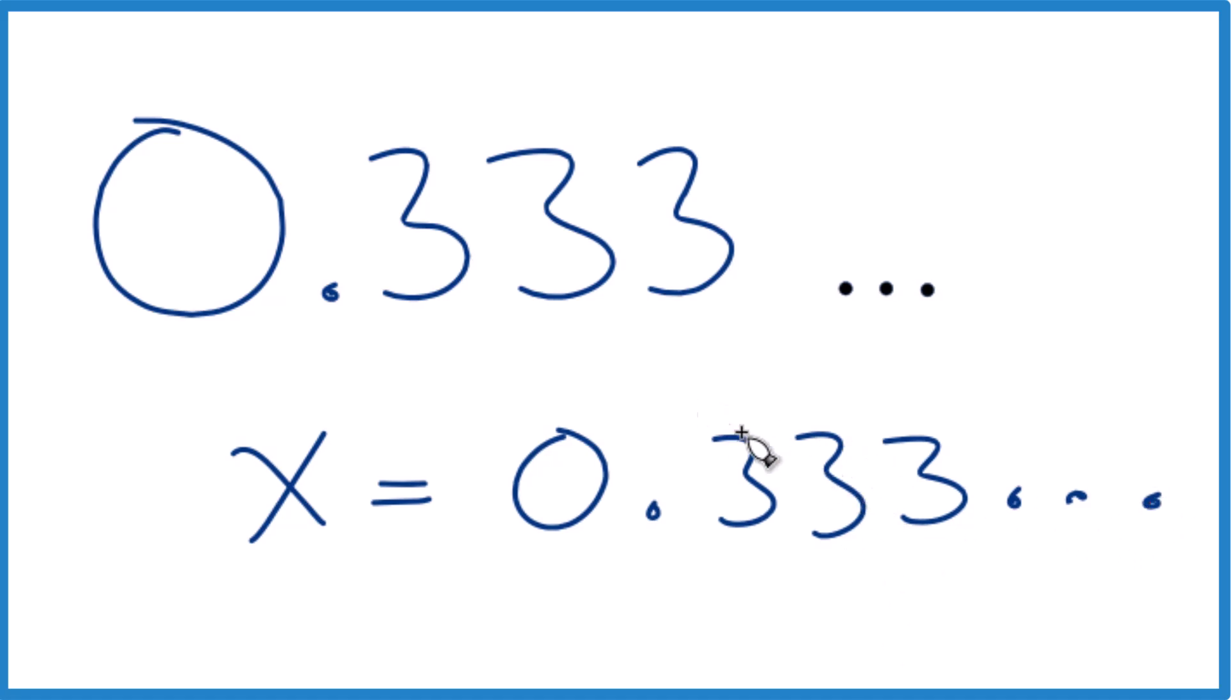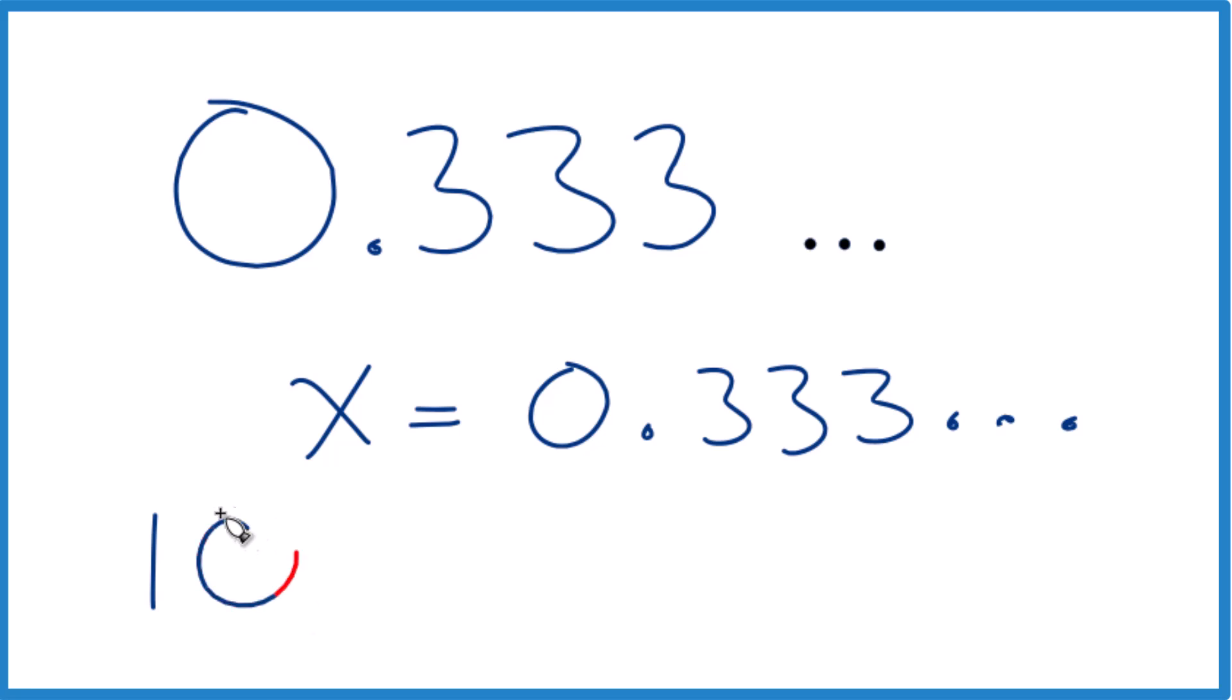What would be nice is if we could get this to a whole number, so we'd have a whole number here in it. I could just multiply it by 10, that would give me 3.3333 repeating, but I have to do it to both sides, this is algebra, right? So 10 times x, that would be 10x.